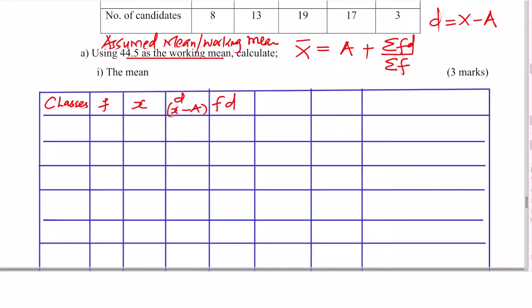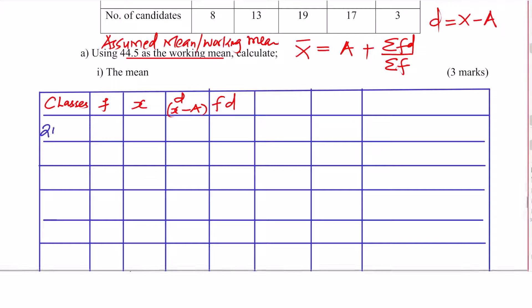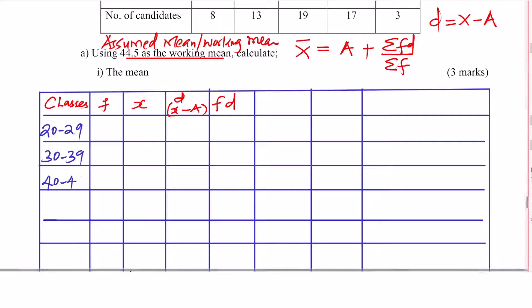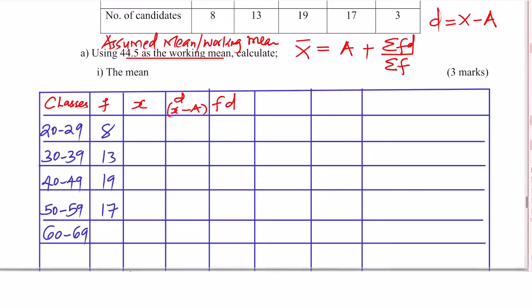The classes are: 20 to 29, then 30 to 39, 40 to 49, 50 to 59, then 60 to 69. The frequencies are 8, 13, 19, 17, and 3.